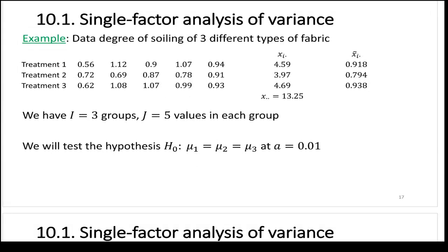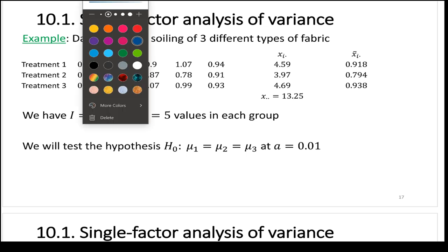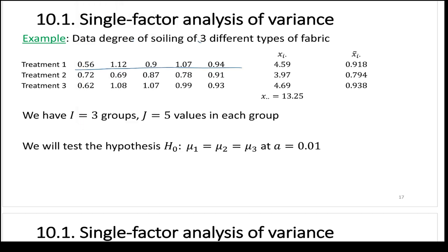Let's look at another example. We have three different types of fabric — some kind of cleaning treatment. Treatment 1 gives values in the first row, treatment 2 in the second, treatment 3 in the third. X-i-dot is the sum of the row, and x-bar-i-dot is the average of the row.